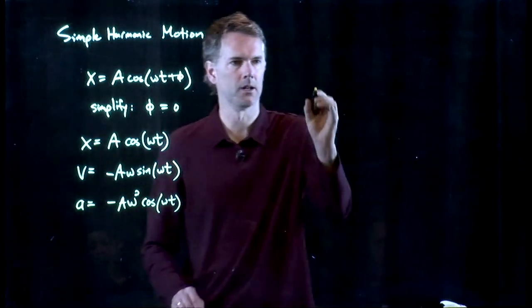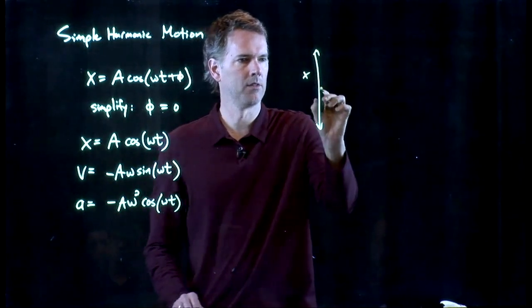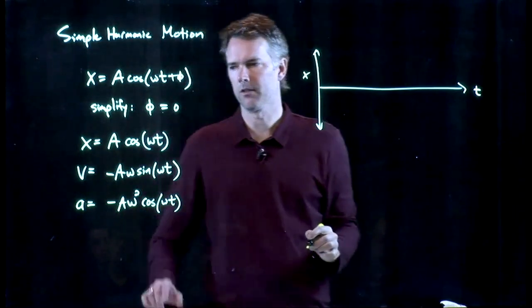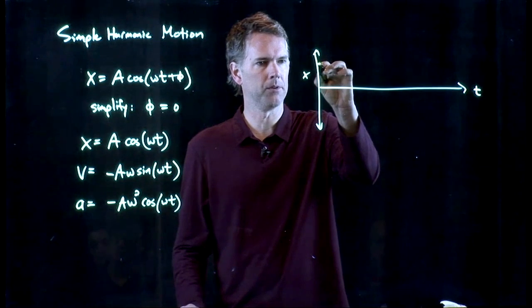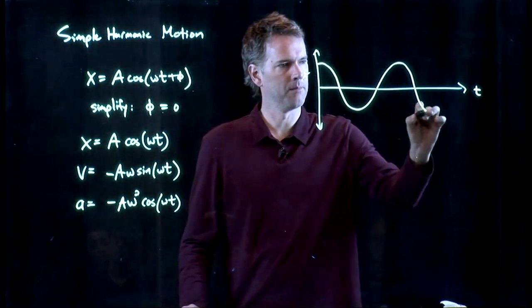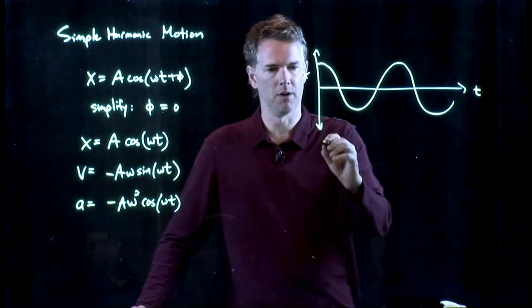Let's plot these out and see what they look like. This is x versus t and it looks like a cosine. We know what a cosine looks like. It starts at some amplitude a, goes down to negative a, goes back up and so forth. That's a cosine.